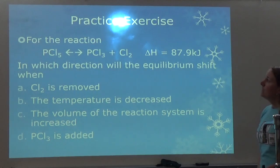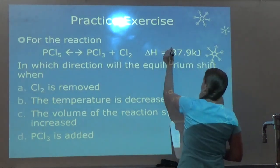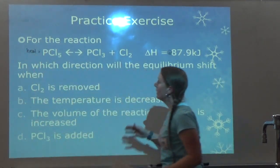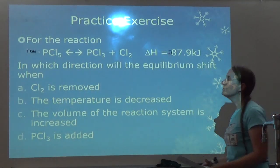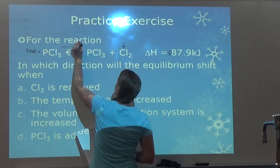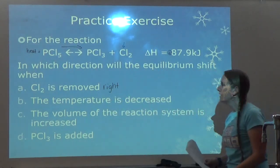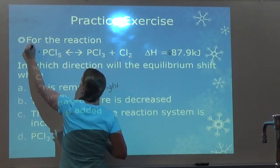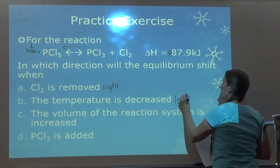Let's look at the next problem together. Delta H is positive again, so heat is considered a reactant. Part A: which way will equilibrium shift if Cl2 is removed? If I decrease my Cl2, it's going to want to make more, so it's going to go to the right. Next: if temperature is decreased — if I decrease my heat, it's going to want to make more, so it's going to shift to the left.